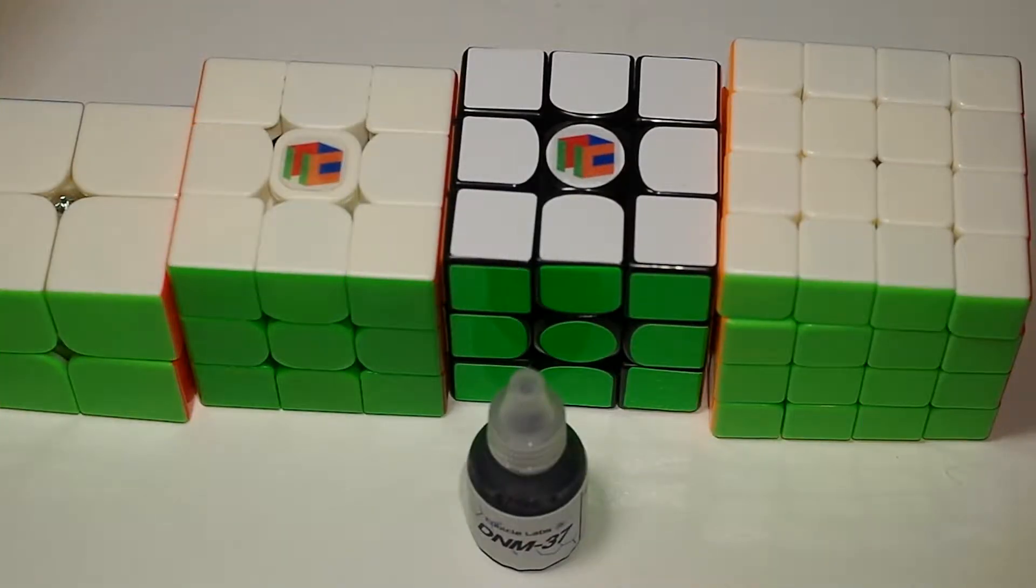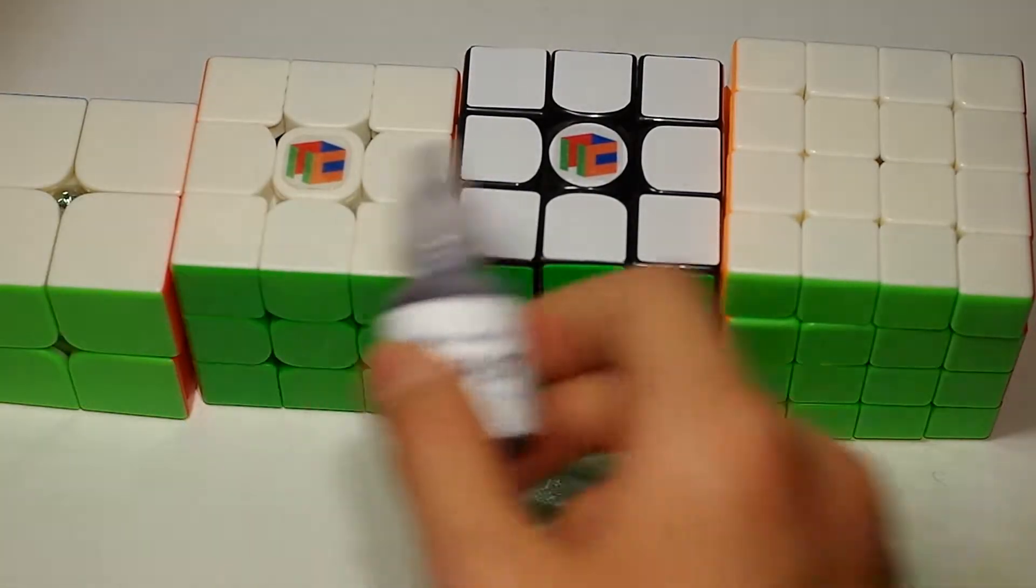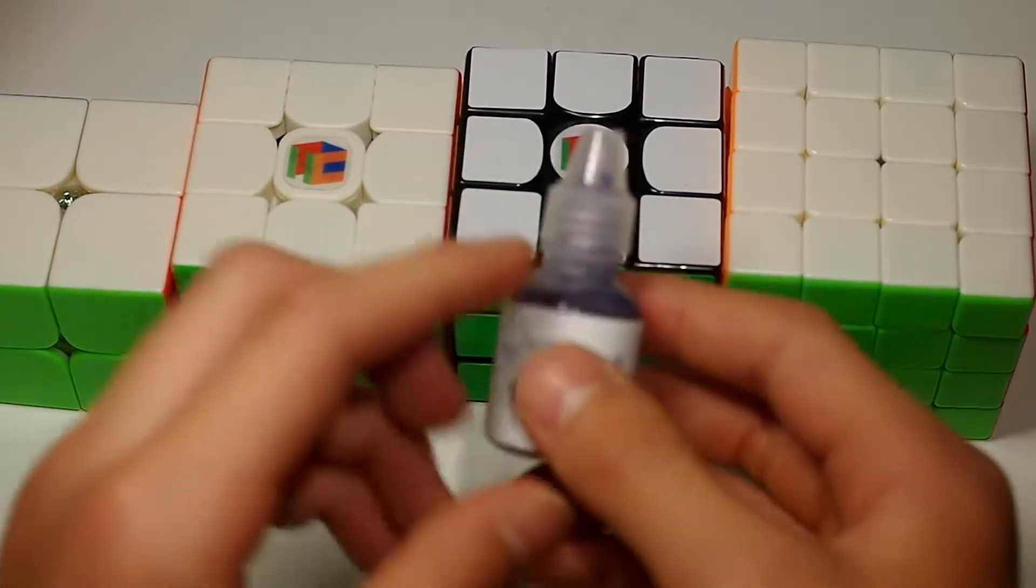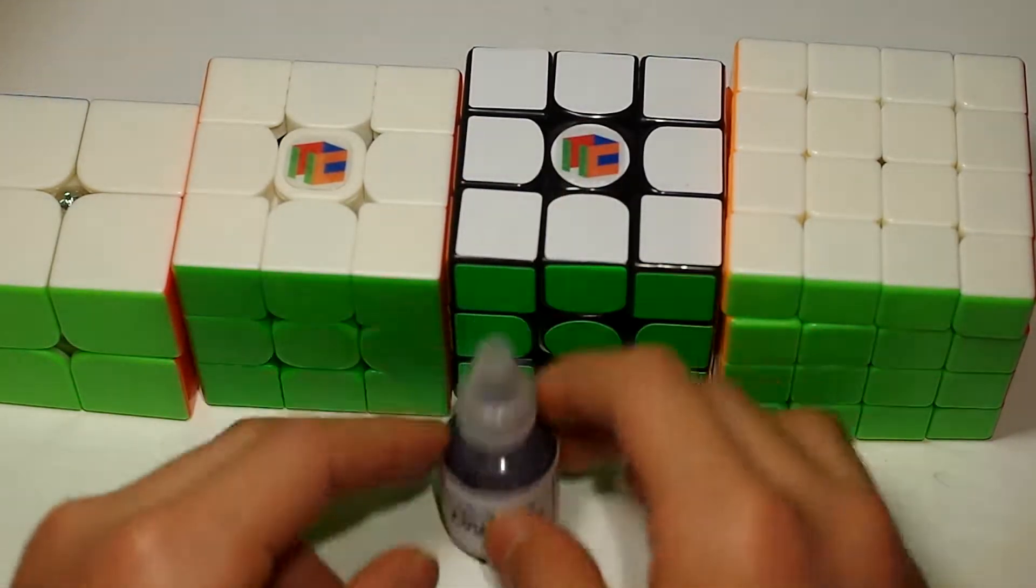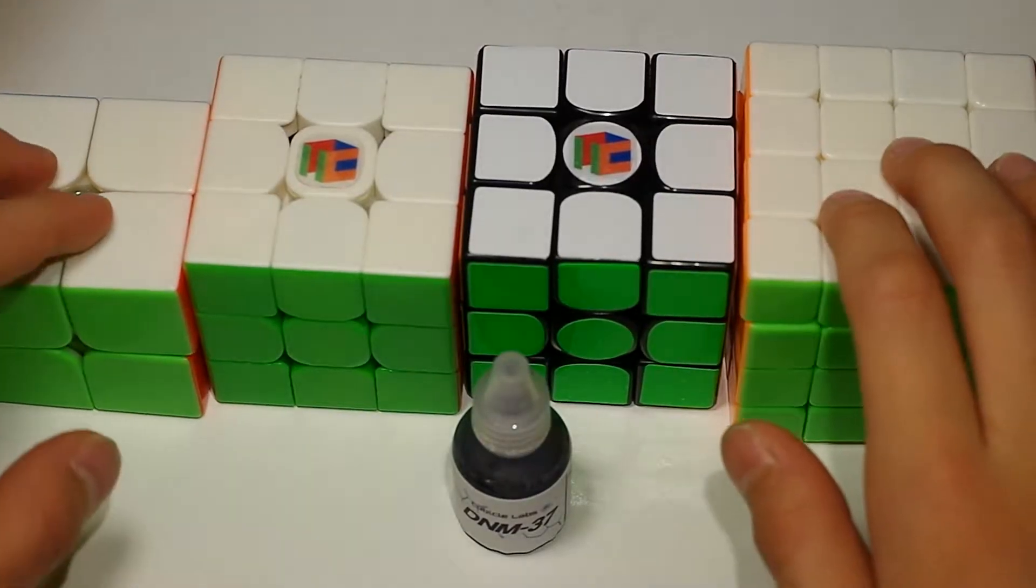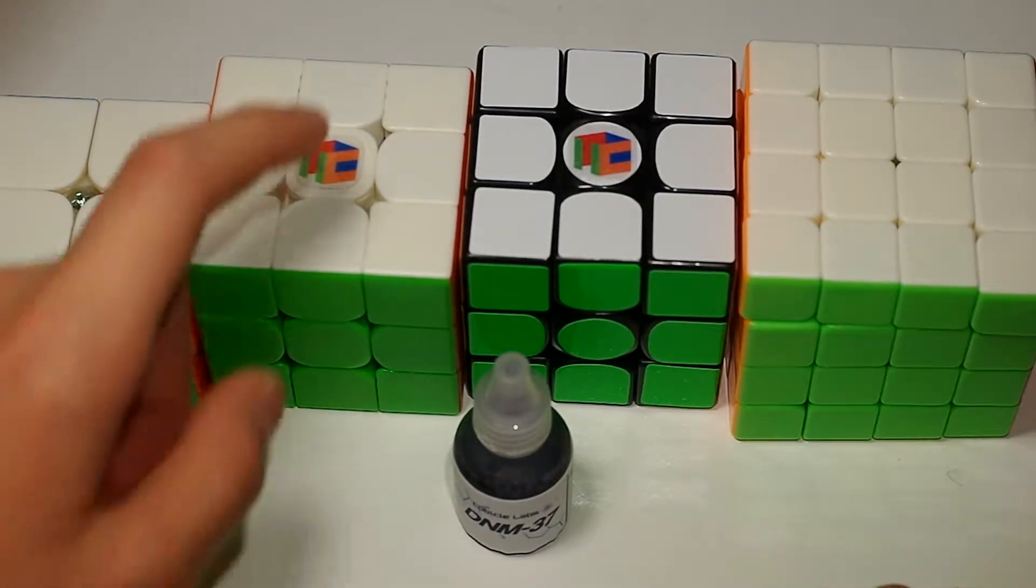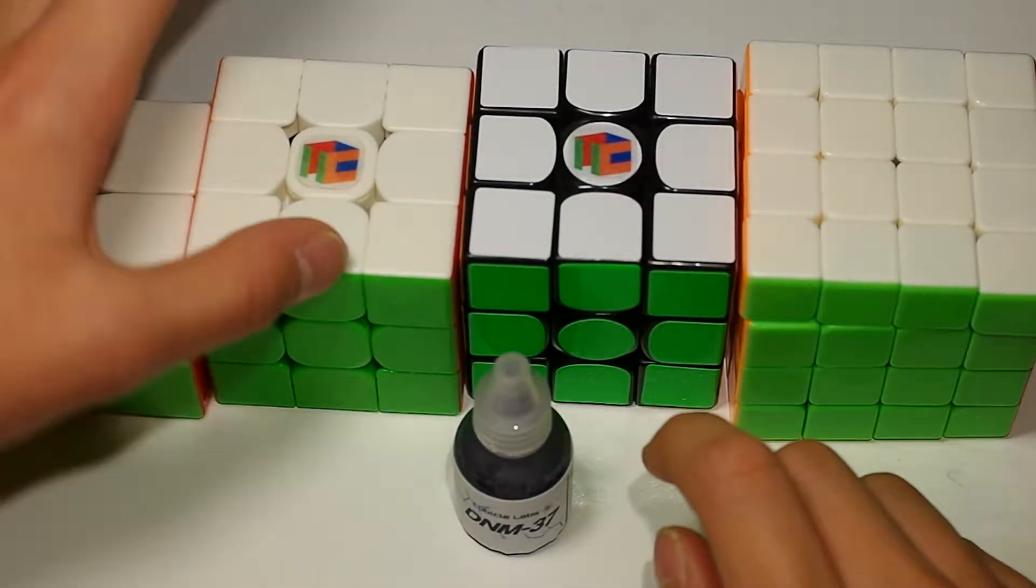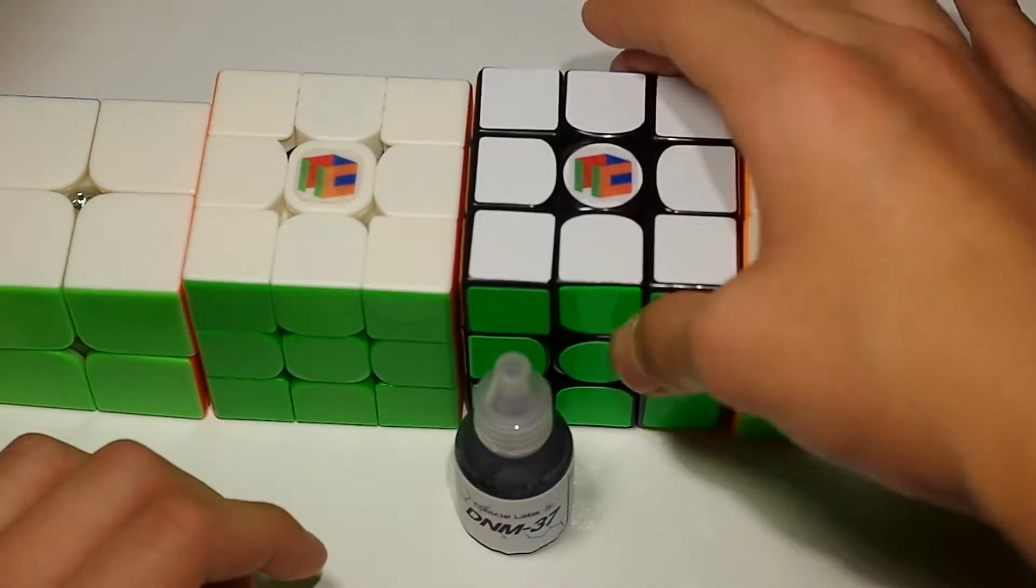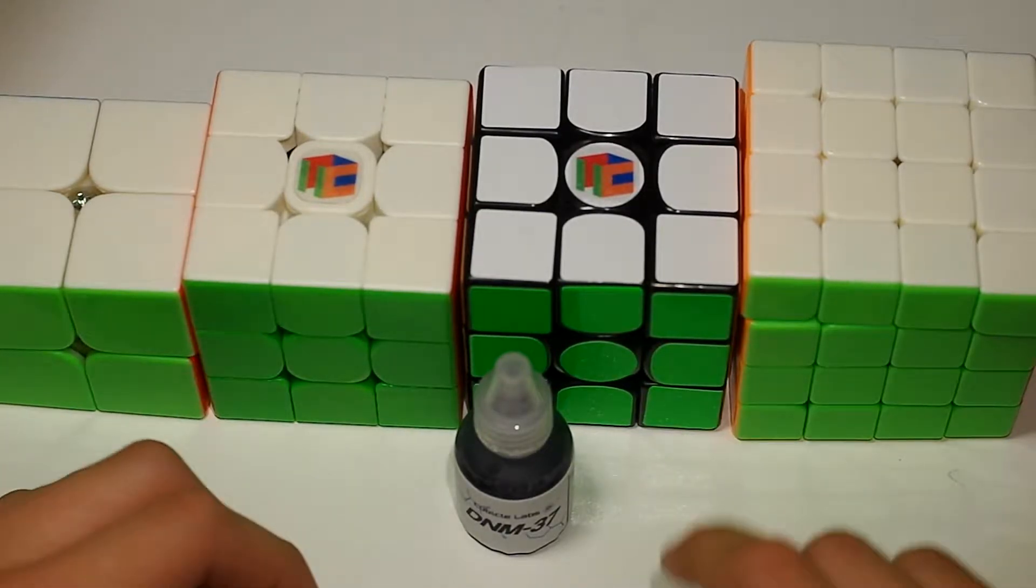Hey guys, it's J-Cube and in this video I will be lubricating all four of these cubes with DNM 37. The MF2S and MF4S are my mains for 2x2 and 4x4. The Yushin Little Magic is a 3x3 that I really enjoy solving on, and this is the Gan Air SM which is E-cube's main, so I'll be lubricating that as well.